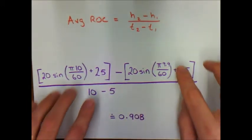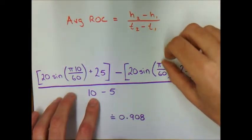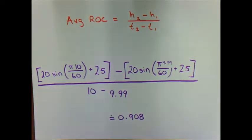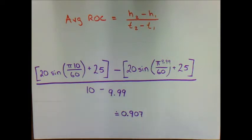One last one. We're now doing the secant line between 10 and 9.99 — getting even closer to the tangent line at 10 seconds. Punching that into the calculator, the approximate value comes out as 0.907. We've clearly been working towards the tangent line at 10 seconds. It is now safe to tackle part b: the instantaneous rate of change at t equals 10 seconds is about 0.907 meters per second.